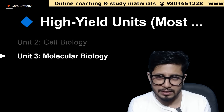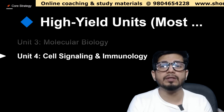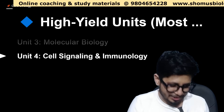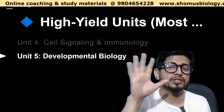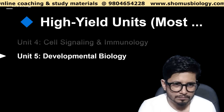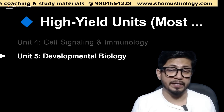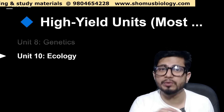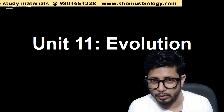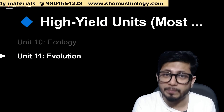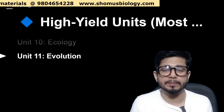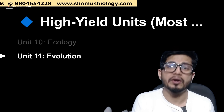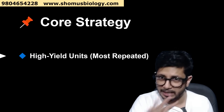Next is unit 3, molecular biology — very, very important, a high yield unit. Unit 4 covers cell signaling, communication, immunology, cancer biology, and host-pathogen interaction — hugely important. Unit 5, developmental biology, is very important. Unit 8, genetics, is also very important. Unit 10, ecology, and unit 11, evolutionary biology, are all important units you should not miss. High yield units are those from where questions are asked repetitively in the examination.